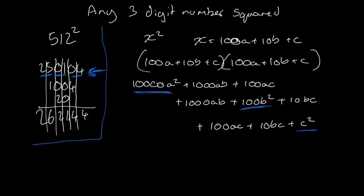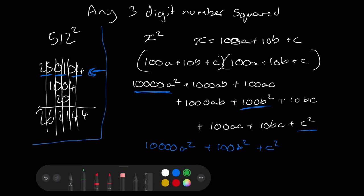So if I write that out as a line, 100 times by 100a² plus 100b² plus c² is actually our first line of that equation. I'll just change color to make it more obvious.